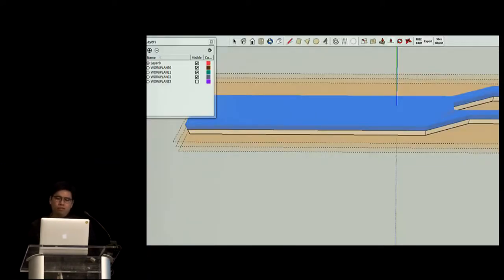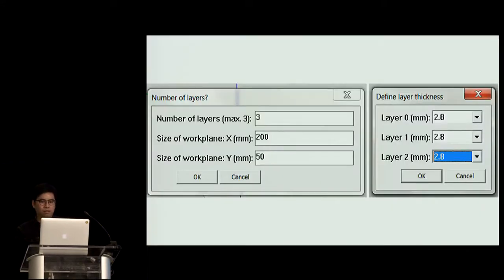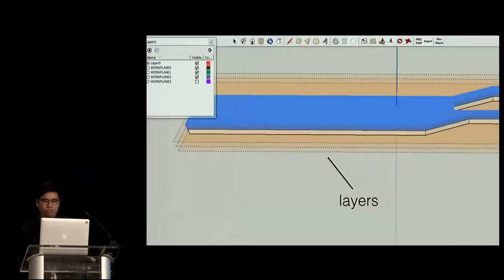So, we build laser stacker editor as a SketchUp plugin. Basically, it shares the same modeling environments and operations with SketchUp. Now I will show you important UI elements using the scissor making example again. First, layers. So, these orange plates correspond to physical acrylic sheets. Now the user can specify the numbers, size, thickness, and layers in the beginning of the modeling process. And we also have a layer control panel. It allows users to toggle the visibility of each layer or constrain the modeling operation within specific layers.